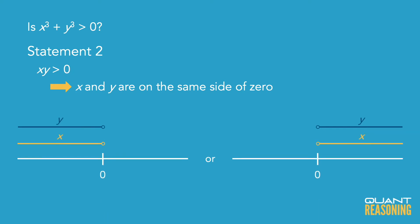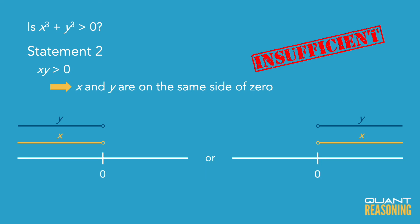those would lead to different answers. If they're both positive, we'd get a definite yes. If they're both negative, we'll get a definite no, and I don't know which of those is the truth.